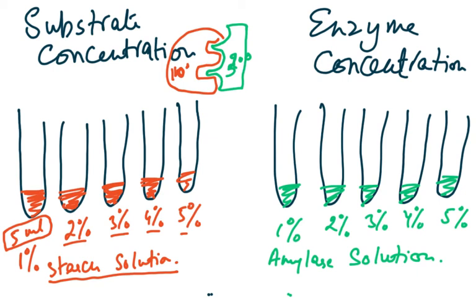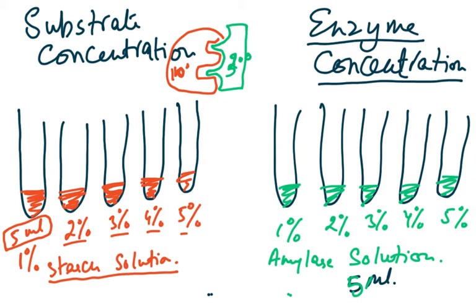To study the effect of enzyme concentration, the volume remains the same — 5 ml of amylase in all test tubes — but we change the concentration. In one test tube there may be 100 active sites, in the next 200, and in the next 300. We change the enzyme concentration and study its effect on the rate of reaction.